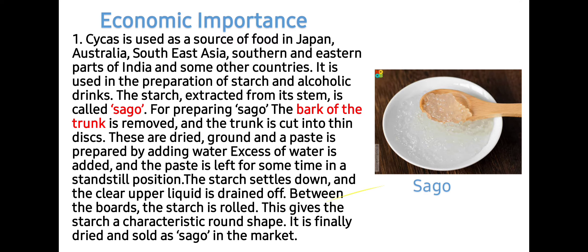Next is the economic importance of cycads. Cycads are used as a source of food in Japan, Australia, South East Asia, southern and eastern parts of India, and some other countries. They are used in the preparation of starch and alcoholic drinks. The starch extracted from the stem is called Sago.